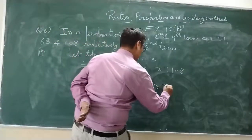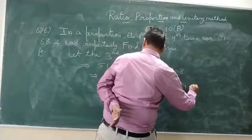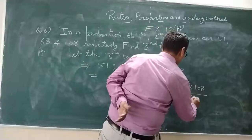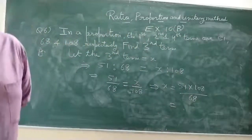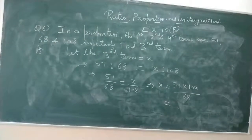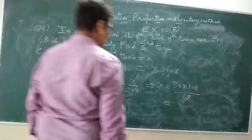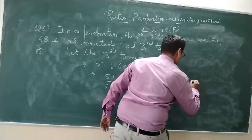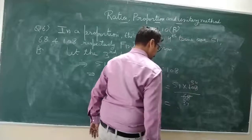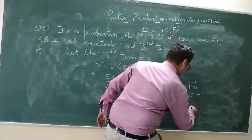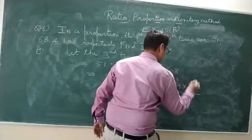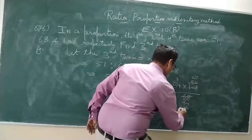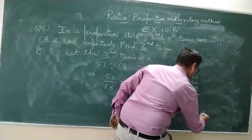So x becomes 51 multiplied by 108 divided by 68. Simplifying: 108 divided by 68 reduces, and working through the calculation gives 3 multiplied by 27, which is 81. Therefore, the 3rd term x equals 81.